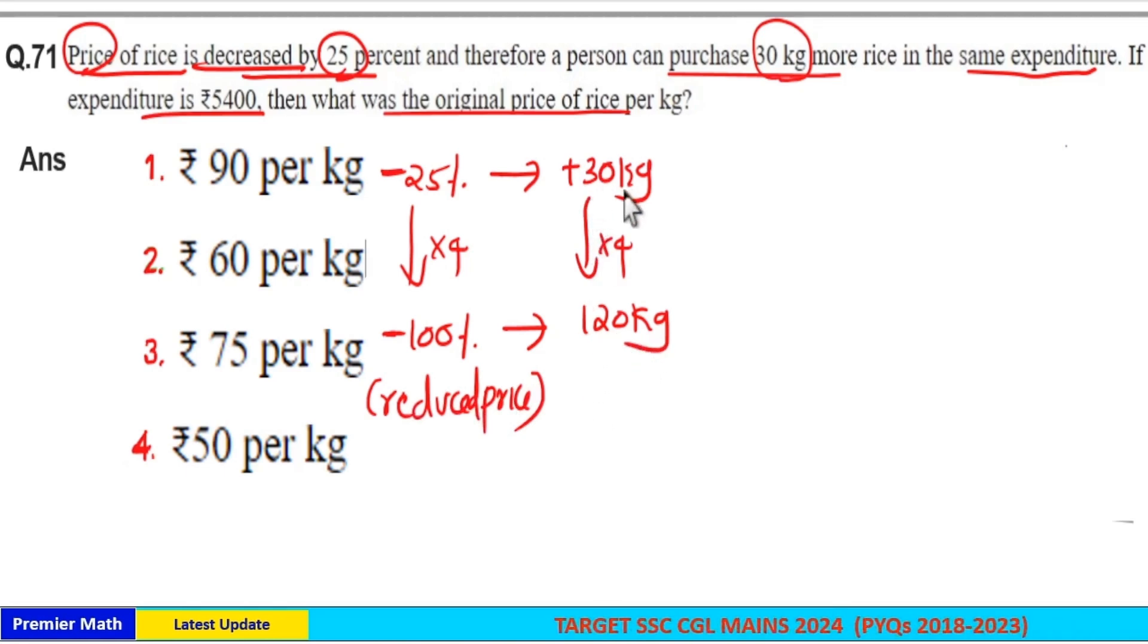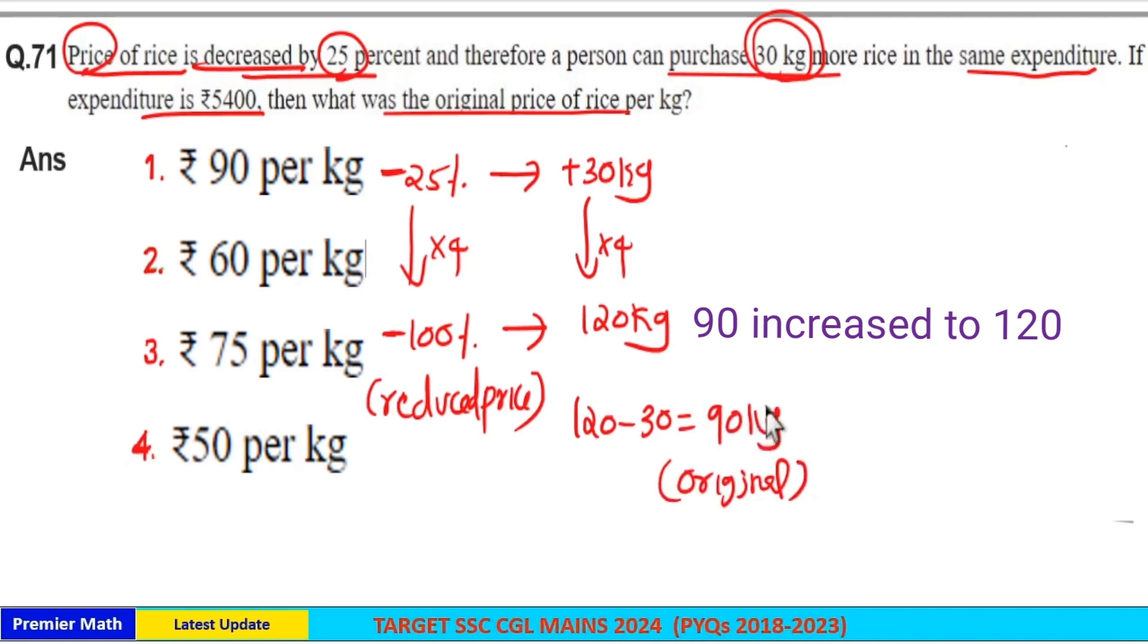This 120 kg includes the 30 kg more. At new price, we will get 30 kg more. So 120 minus 30 is 90 kg, which is the original amount. Initially it was 90 kg, total 120 kg at new price.